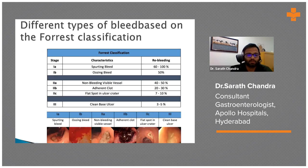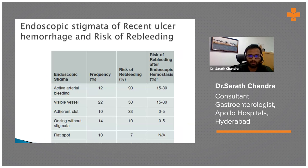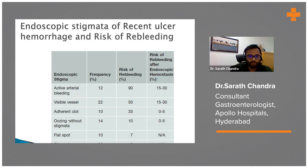This is the Forrest grading. Here you can see a clean-based ulcer on the right, followed by a bleeding flat spot, adherent clot, visible vessel, oozing, and spurting. This is important because we can know which patients are at high risk of re-bleeding. For a clean-based ulcer, the risk of re-bleeding is 3%, so no intervention is needed — double dose PPI is sufficient. Up to flat spot, we can treat medically. From oozing without stigmata, adherent clot, and active arterial bleed, these patients require endoscopic management.